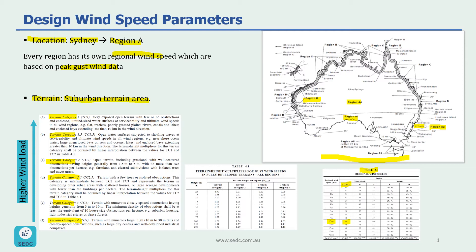If you go through the description for each terrain category you can easily find your own. For example, terrain category one is for very exposed open terrain with few or no obstructions, and includes limited size water surfaces at serviceability and ultimate wind speeds in all wind regions — e.g., flat, treeless, poorly grassed plains, rivers, canals, and lakes and enclosed bays extending less than 10 kilometers in wind directions. Terrain category one requires higher wind load factors, while terrain category four requires the lowest wind load factors.